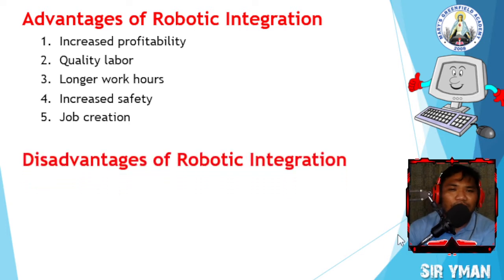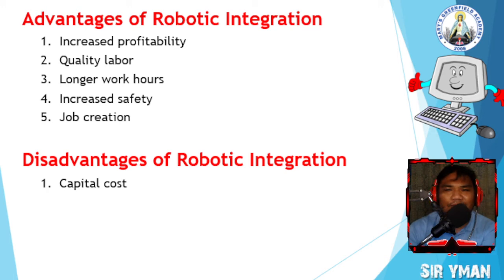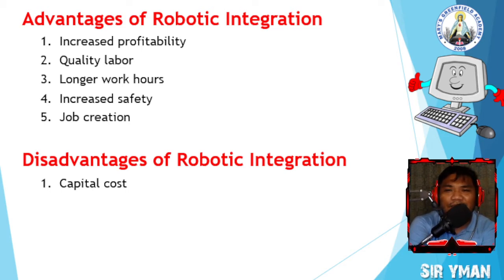This is a review of what we discussed last Wednesday. The first disadvantage of robotic integration is capital cost. Integrating robotics is very expensive. At first glance, the initial capital investment may discourage many business owners from robotic integration. It is important to think long-term about capital cost. It is recommended that a businessman must calculate the expected ROI or return of income before attempting to integrate robotics.